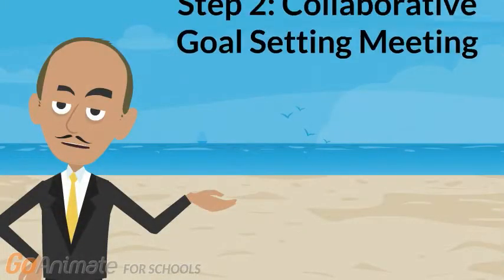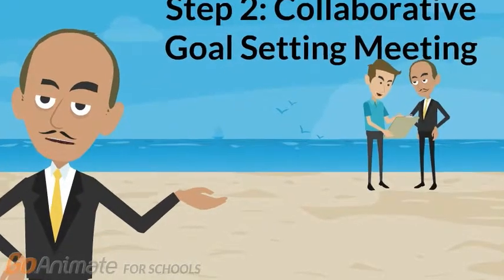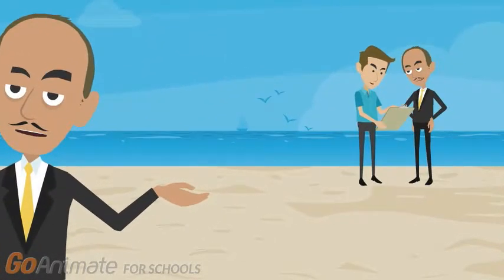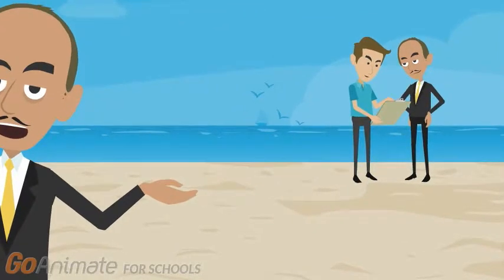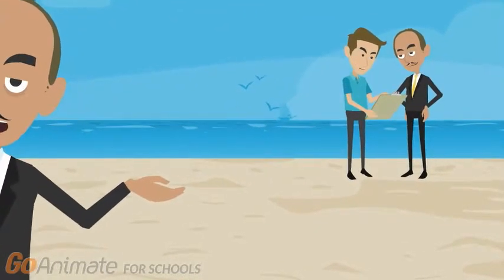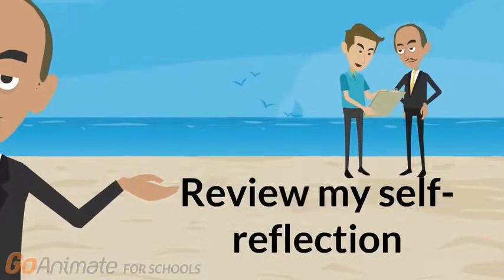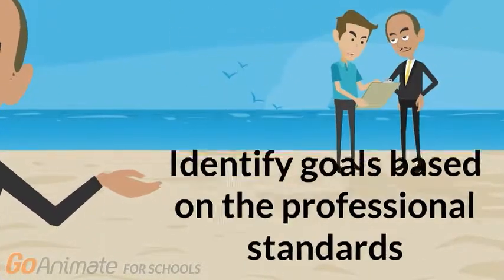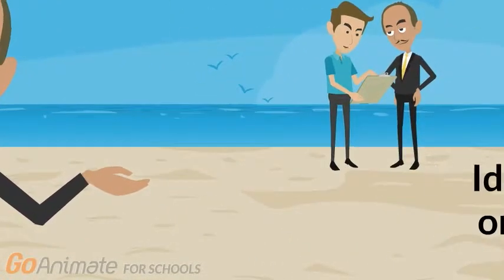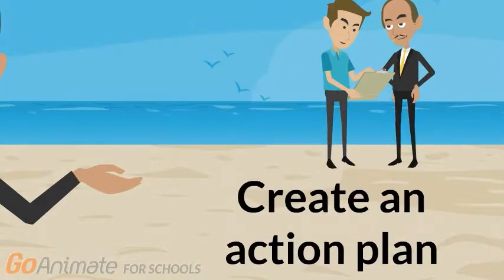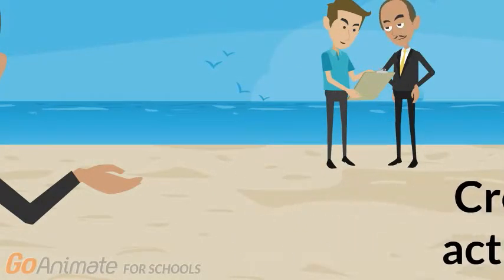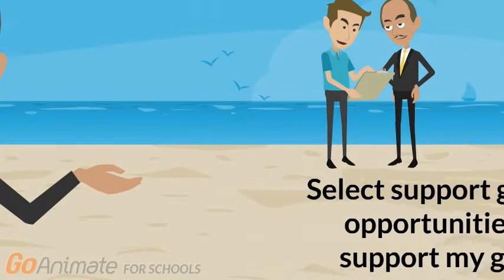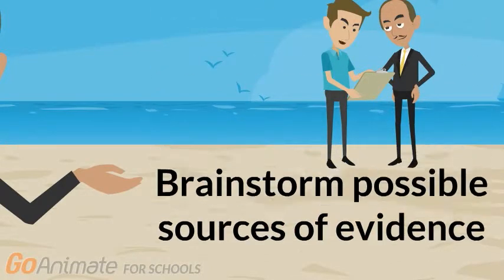The second step is the collaborative goal-setting meeting. In this step, I will collaborate with my administrator or manager to establish my growth goals for the year. During our meeting, we will review my self-reflection, identify goals based on the professional standards, create an action plan, select supportive growth opportunities to support my goals, and brainstorm possible sources of evidence.